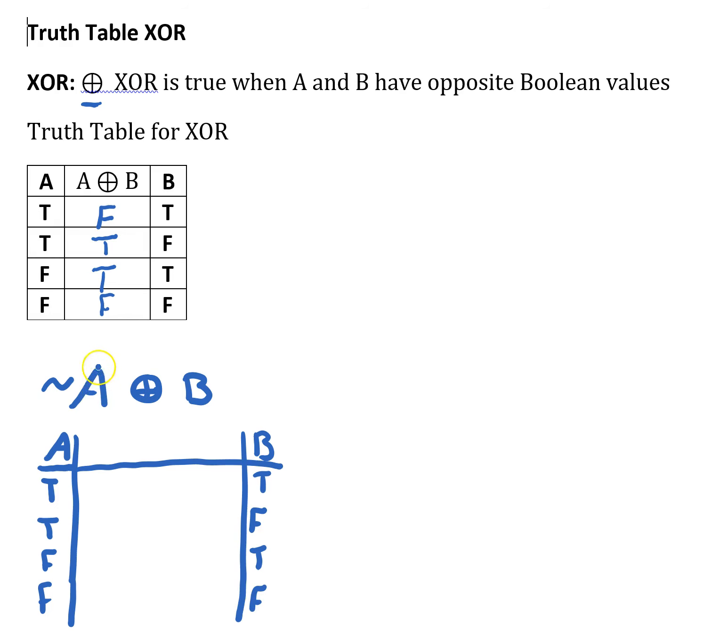Now I'm going to take a look at NOT A. NOT A is the opposite of A. Opposite of TRUE is FALSE. Opposite of TRUE is FALSE. Opposite of FALSE is TRUE. Opposite of FALSE is TRUE.